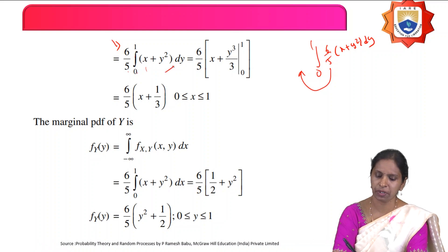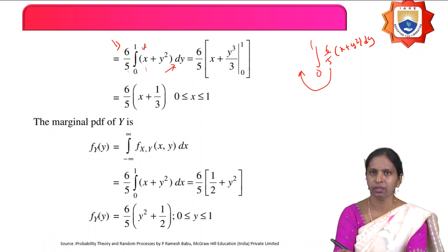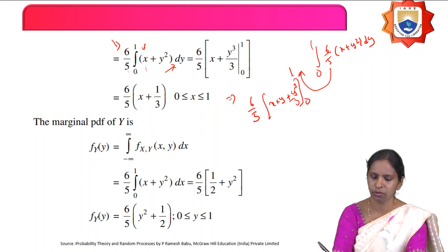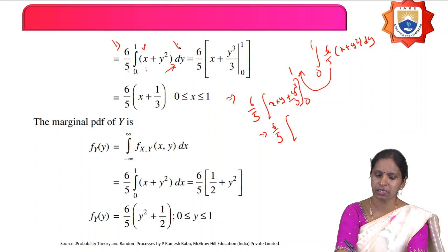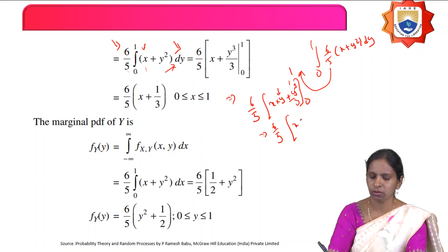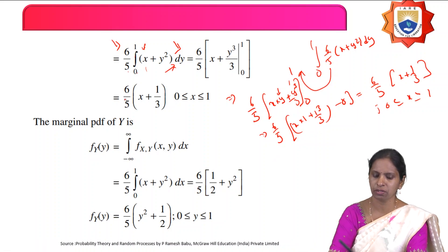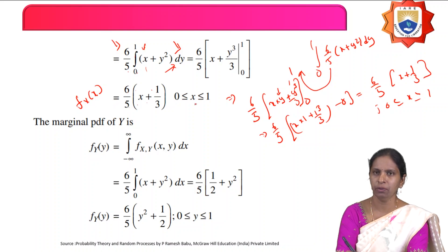The integration is with respect to y, so x² is treated as a constant. Evaluating: (6/5) times [x²·y + y³/3] from 0 to 1. Substituting the limits: (6/5)(x² + 1/3) for x from 0 to 1. Therefore, the marginal density function of x is f_x(x) = (6/5)(x² + 1/3) for 0 ≤ x ≤ 1.